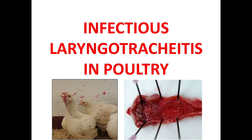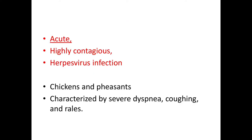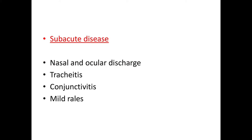ILT is an acute, highly contagious herpes virus infection of chickens and pheasants, mainly characterized by severe dyspnea, coughing, and rales. The disease can also present in a subacute form, which is characterized by nasal and ocular discharge, tracheitis, conjunctivitis, and mild rales.